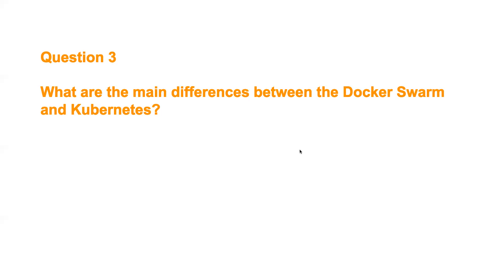Question number three: what are the main differences between Docker Swarm and Kubernetes? Both are container orchestration environments designed to solve the same purpose — one made by Docker and the other by Google. Kubernetes has advantages over Docker Swarm in terms of scalability, monitoring configuration, custom resource definitions for advanced load balancing, API gateway integration, and web application firewall support. Kubernetes is overall a production-grade system backed by a great community including CNCF and many contributing companies.